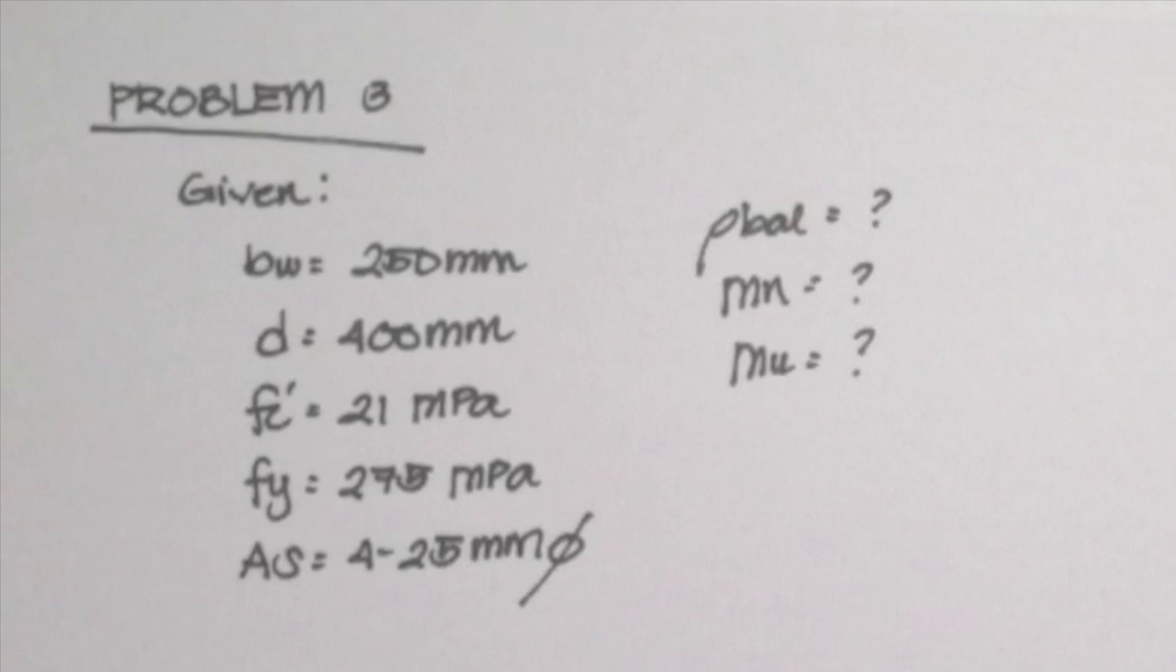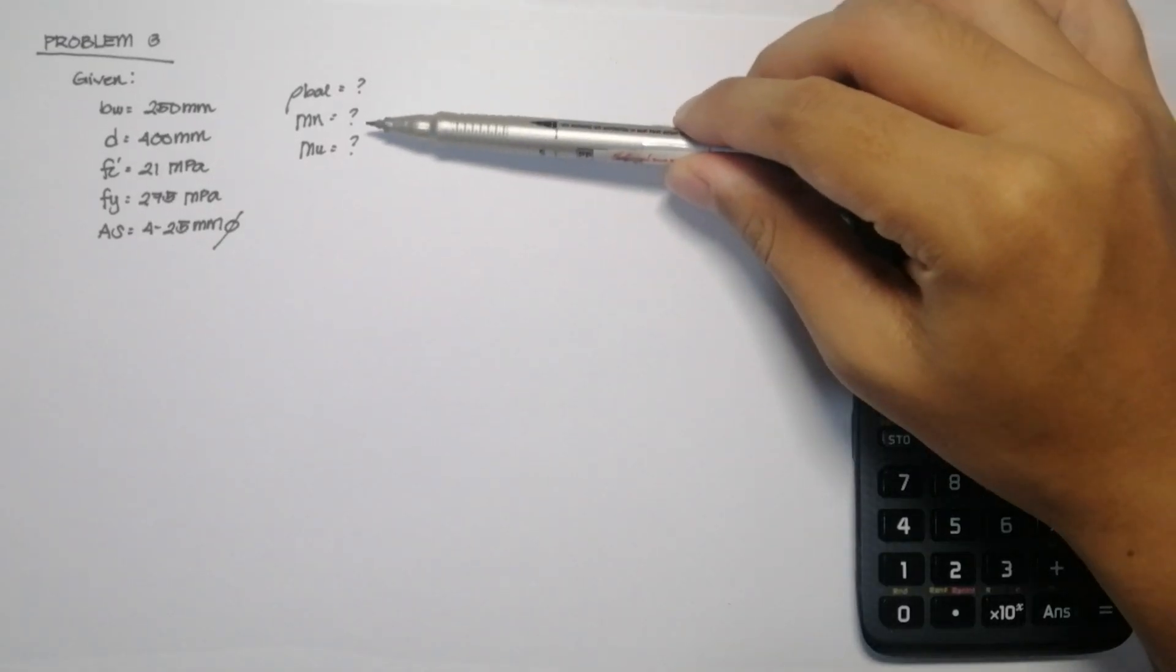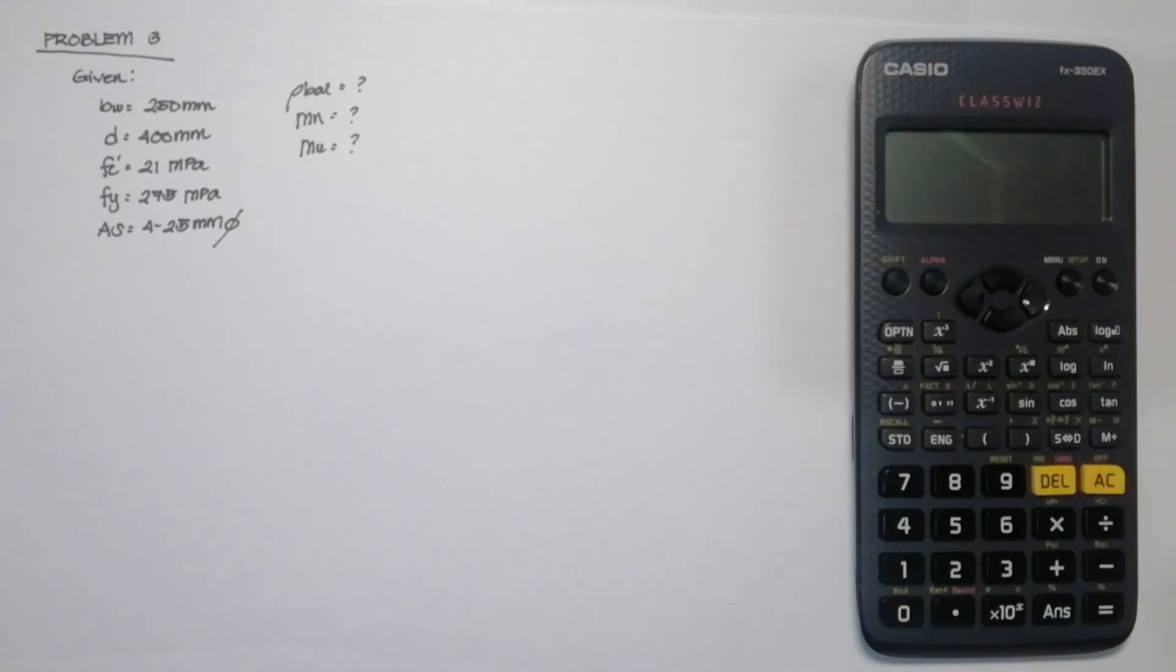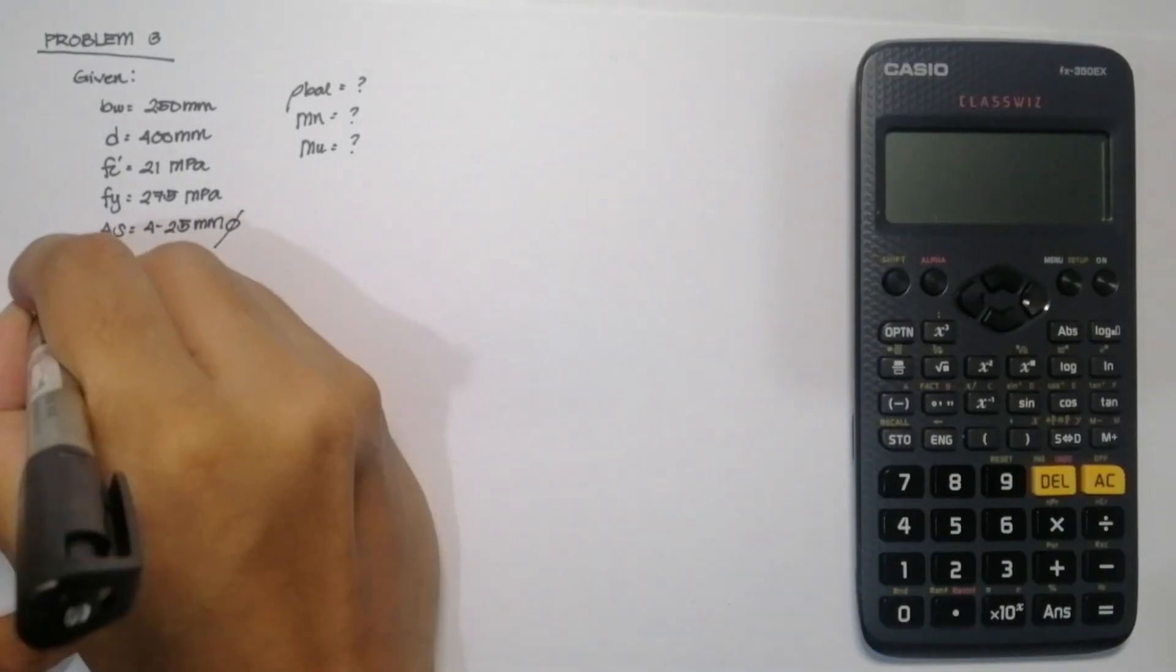So the first question is, we need to find the value of the balance reinforcement ratio. Second is to find the nominal moment capacity. And lastly, we need to find the design flexural strength or the ultimate moment capacity of the beam.